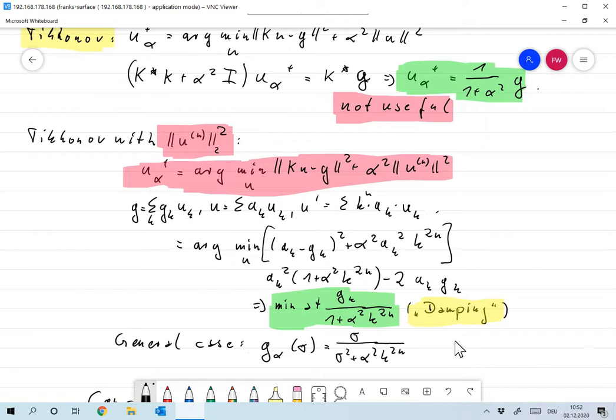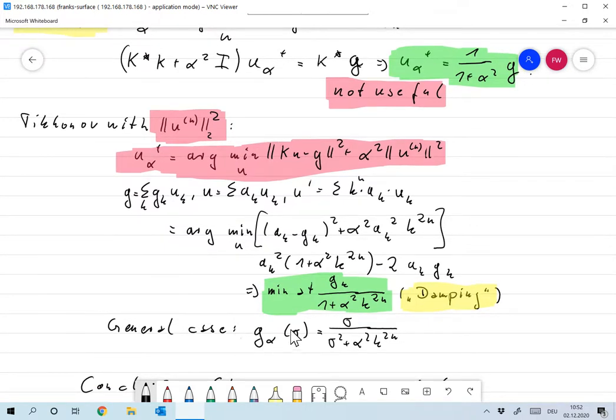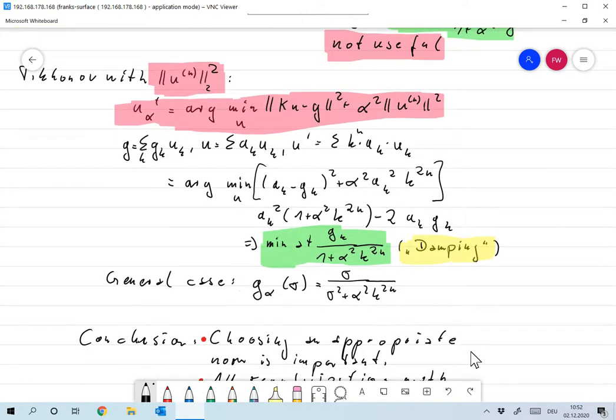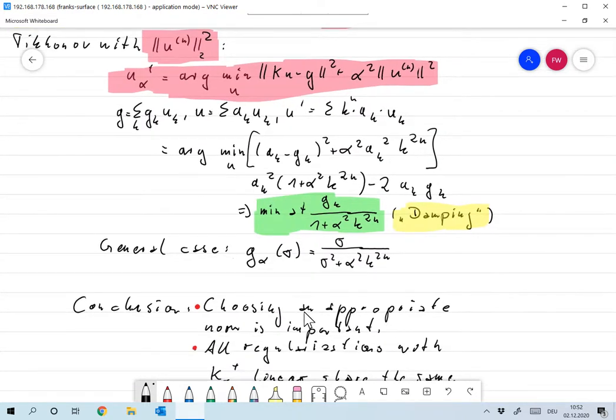You immediately see that if you take n equals to zero you get back normal Tikhonov. Also for a general case with not all singular values equal to one, you can easily do that too and you find that g alpha of sigma in that case should be chosen as sigma over sigma squared plus alpha squared k to the 2n.